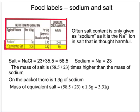On to questions about sodium and salt. Salt is sodium chloride, or NaCl, made up of one sodium atom weighing 23 and a chlorine atom weighing 35.5. So the relative formula mass of salt (sodium chloride) is 58.5. The sodium atom is 23, so only 23 out of 58.5 of salt is actually sodium.